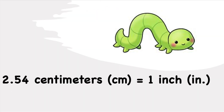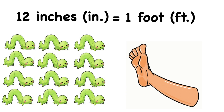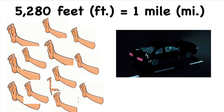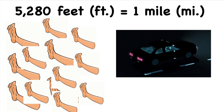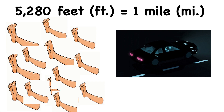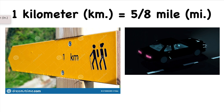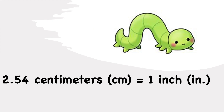2.54 centimeters equals 1 inch. 12 inches equals 1 foot, every single time. 5,280 feet equals 1 mile. 1 kilometer equals 5 eighths of a mile.